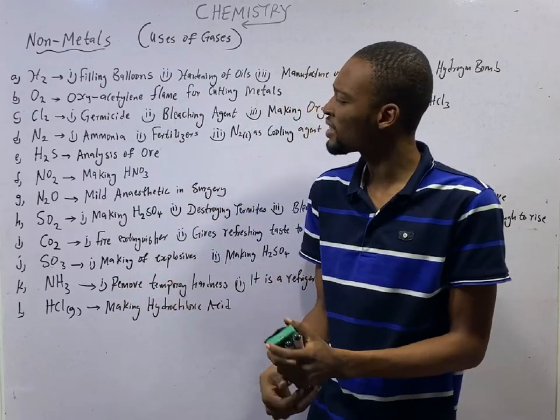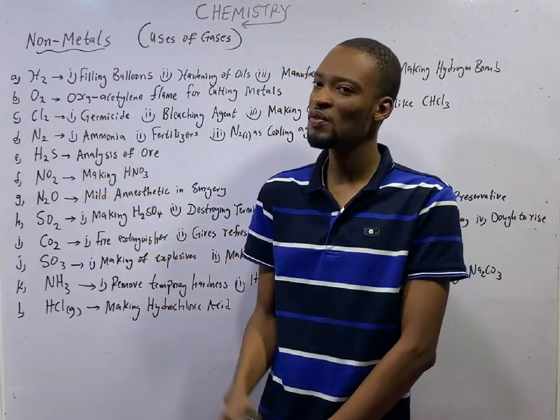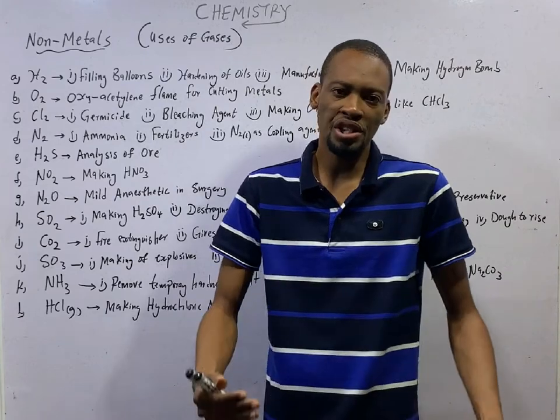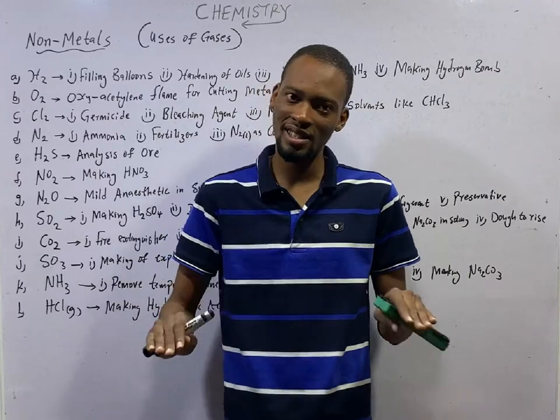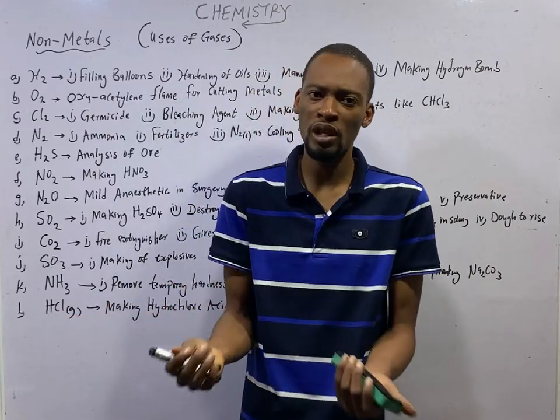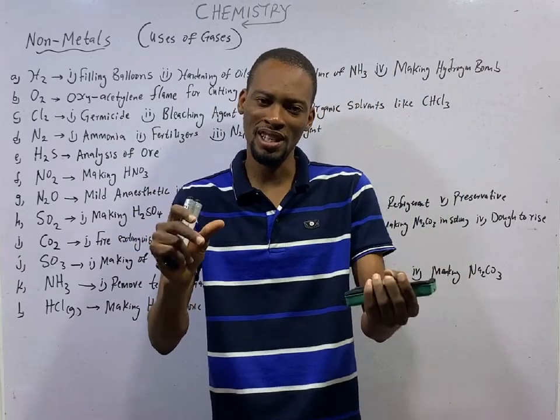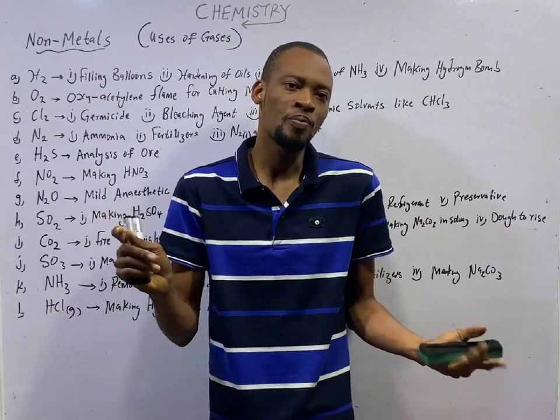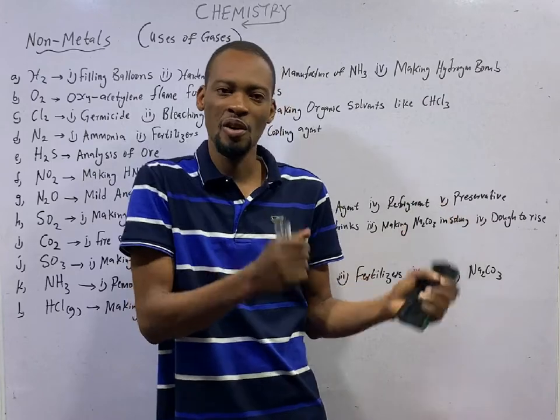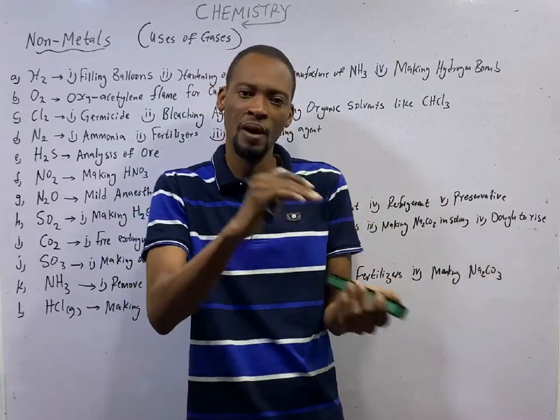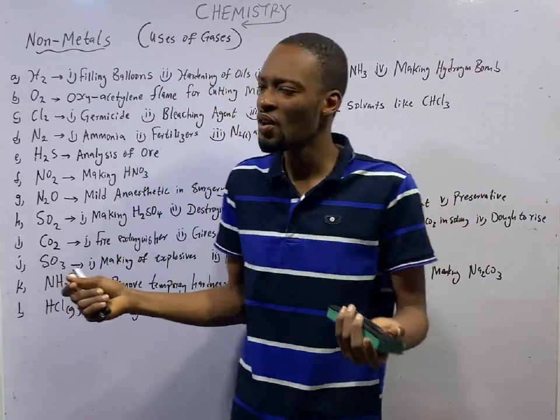The first non-metal we have is the hydrogen gas or the hydrogen molecule. Just H is a hydrogen atom. But remember, atoms cannot exist on their own. They combine as molecules. This makes molecules the smallest part of a substance that can exist on its own. Atom is actually the smallest particle of a substance, but it cannot exist on its own. Atoms are smaller than molecules. In fact, molecules are gotten from atoms.